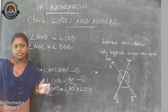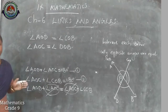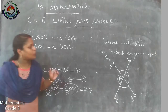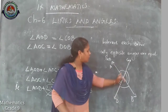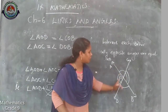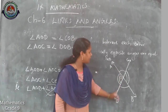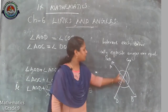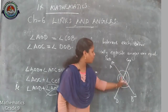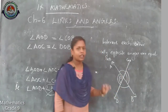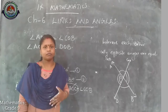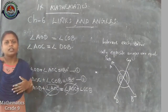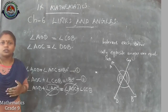So that is our first theorem: if two lines intersect each other, then the vertically opposite angles are equal. To prove this we applied the linear pair axiom — the linear pairs AOD and AOC, and AOC and COB — each summing to 180 degrees. We applied the linear pair axioms to prove this theorem. Study this theorem. That is all for today, thank you.